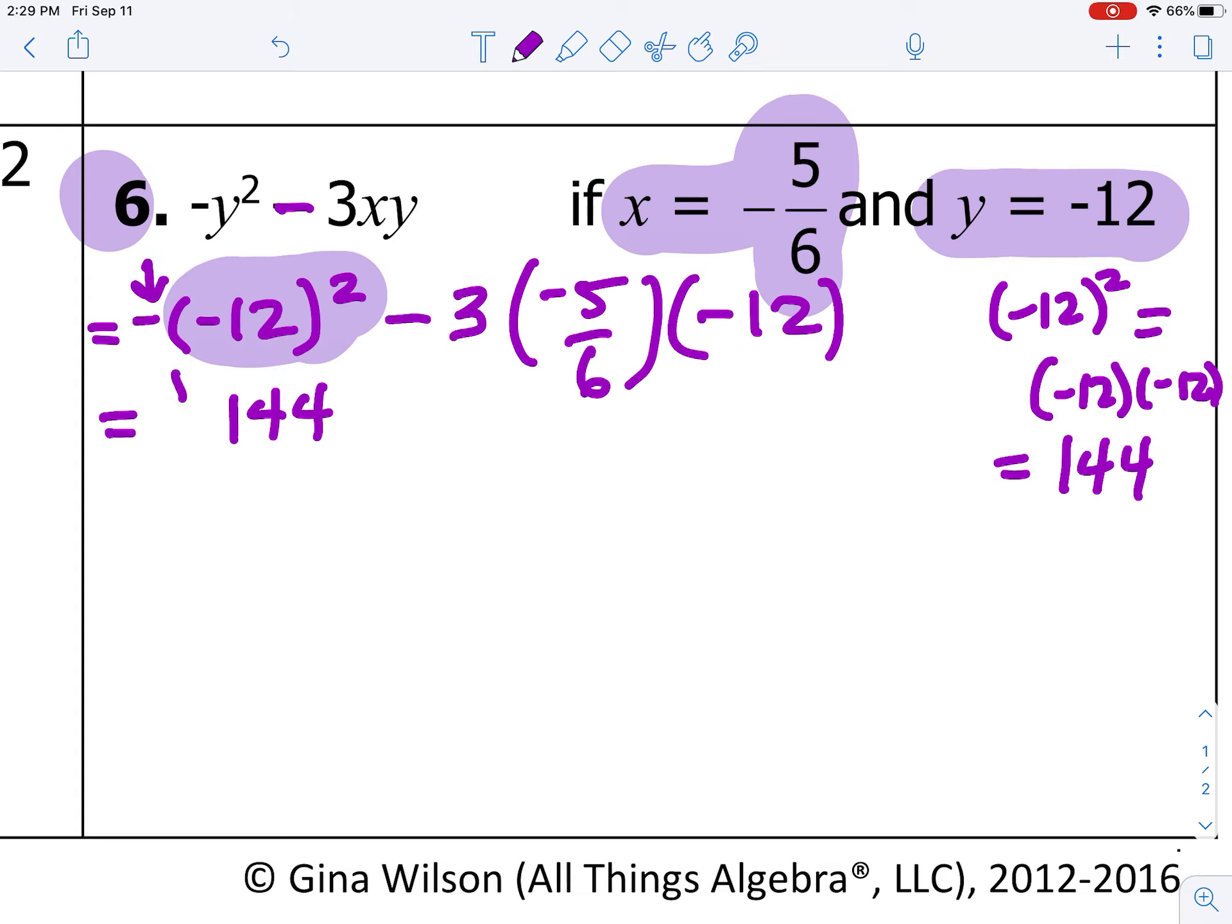You want to notice that the negative on the outside still needs to be there. So, this changes back to a negative 144 because of the negative on the outside of those parentheses. From here, I need to consider what I need to do with these fractions. In order to multiply fractions, we need to give 3 a denominator. 3 is the same thing as 3 over 1. And, remember, when we multiply fractions, we multiply them going straight across.